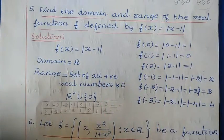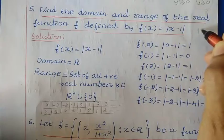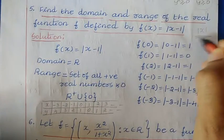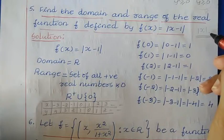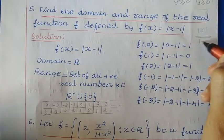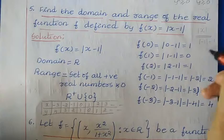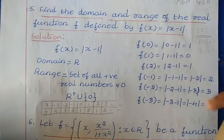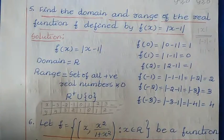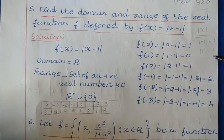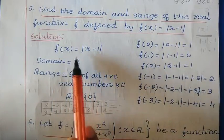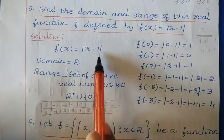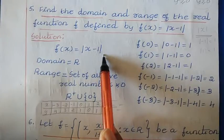We have already discussed the modulus function as mod x in the theory concept. Inside this function, whatever input you give, either positive or negative — if you write -1, you get the answer 1; if you write 1, you get the answer 1. So for all negative as well as positive values, this function gives a positive answer. The only difference here is that we have x minus 1 inside the mod.